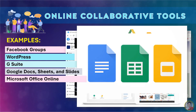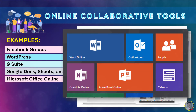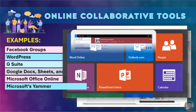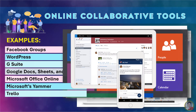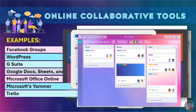Number 5 is Microsoft Office Online, which allows multiple people to work on different Office files. Number 7 is Microsoft Yammer, which offers companies their own social network for sharing and managing content. Number 8 is Trello, which offers an online checklist or to-do checklist for your entire team.